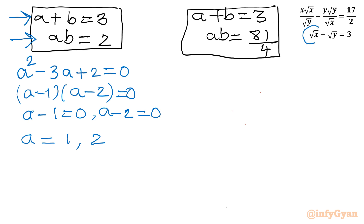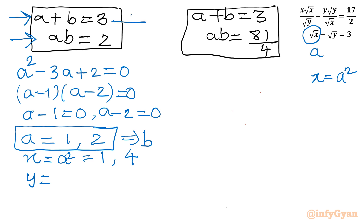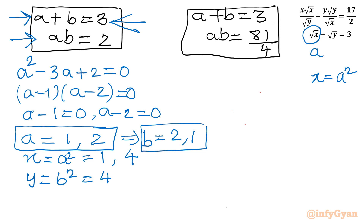Since a = √x, we have x = a². So x = 1² = 1 or x = 2² = 4. From a + b = 3, when a = 1, b = 2, and when a = 2, b = 1. Since y = b², we get y = 4 or y = 1. So our ordered pairs (x, y) are (1, 4) and (4, 1).